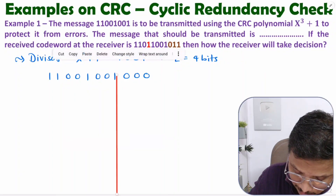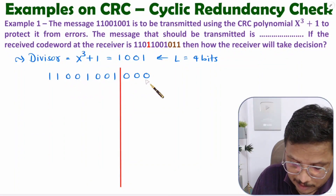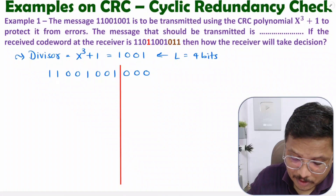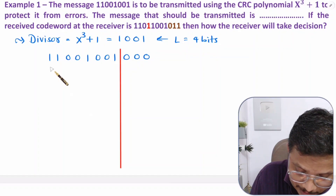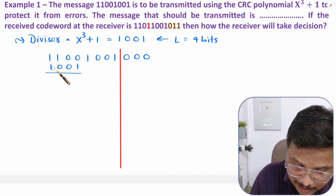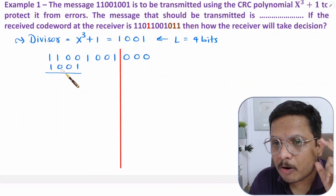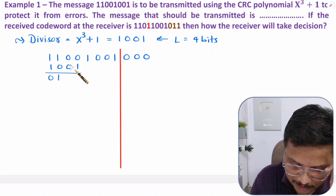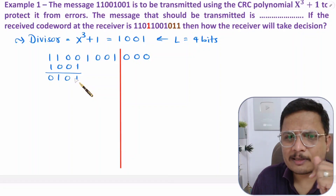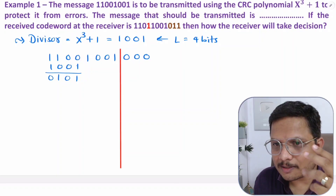The divisor is 1001. Now divide using XOR operation only — no carry. Performing XOR: 1 1 0 gives 1 0 1; then 0 0 0 0 gives 0 0; then 1 1: continue the XOR steps. The result after the first step: 1 1 0 0 0 0 0 0 1 1 1 0 1.